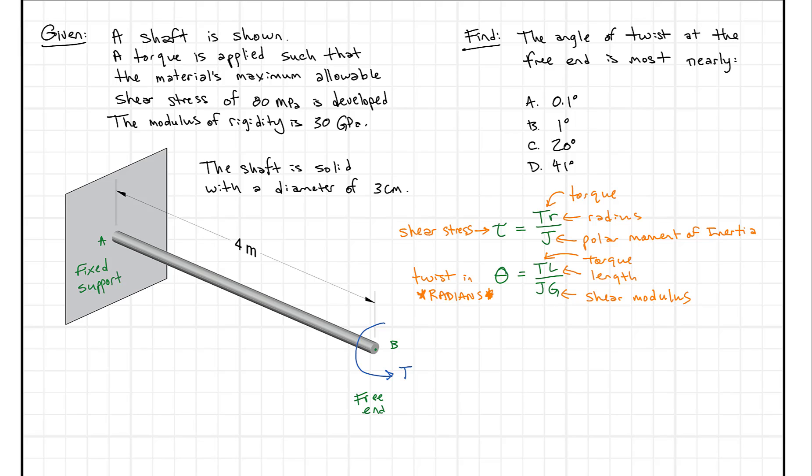One other piece that we need to know is this formula for J. So J in the FE Reference Handbook is given as pi times a to the fourth over two. And what we know A is is for any given circle A is the radius. That's going to give us our maximum torsional shear stress. And you can find that shear stress at other points. But A in this case is going to be the radius.